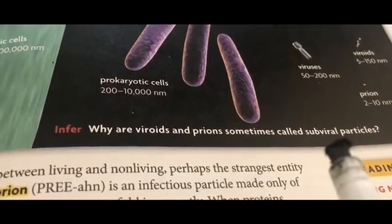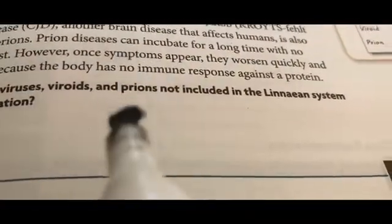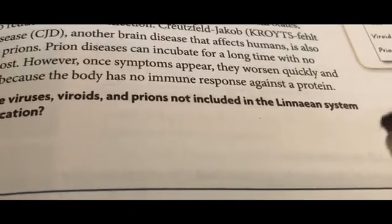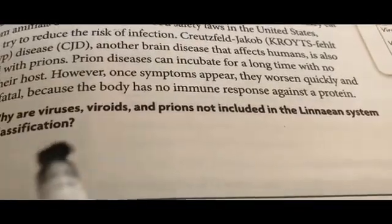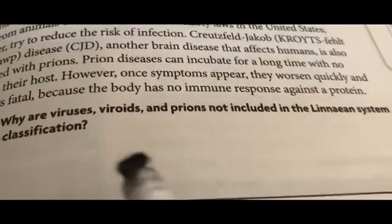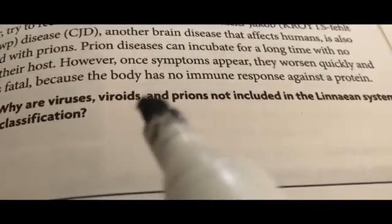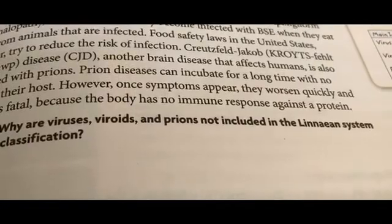Why are viruses, viroids, and prions not included in the Linnaean system of classification? Because the Linnaean system of classification includes only living things, while viruses, viroids, and prions are non-living things.